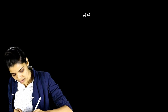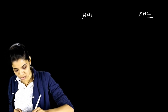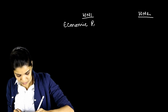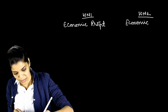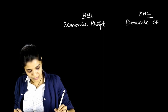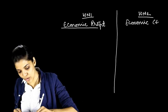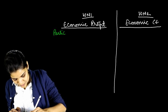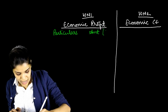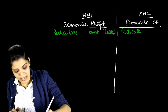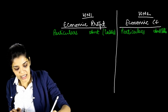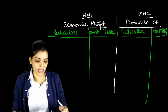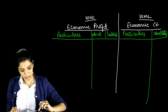Working note number 1 is economic profit, and working note number 2 is economic capital employed. We will derive both together since any item will affect both simultaneously. I write everything clearly so that you also write well in the exam — don't just start directly. Writing working notes and presentation also makes the examiner more inclined to give good marks.